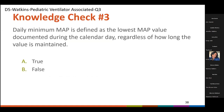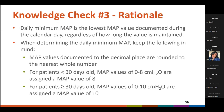Here we have knowledge check number 3. Daily minimum MAP is defined as the lowest MAP value documented during the calendar day, regardless of how long the value is maintained. True or false? 72% of you chose the correct answer, which is true. Daily minimum MAP is the lowest MAP value documented during the calendar day, regardless of how long the value is maintained. Keep in mind: MAP values documented at the decimal place are rounded to the nearest whole number, and MAP values are assigned based on patient's age — less than 30 days old, values of 0 to 8 are assigned a MAP of 8; 30 days or older, values of 0 to 10 are assigned a MAP value of 10.